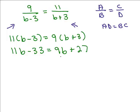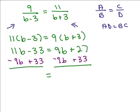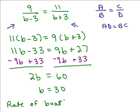Now solving for B: subtract 9B from both sides, then add 33 to both sides. That gives 2B equals 60, so B equals 30. The rate of the boat in still water is 30 miles per hour.